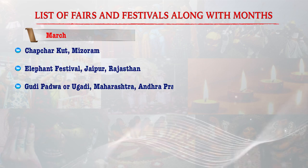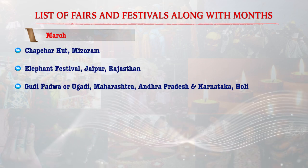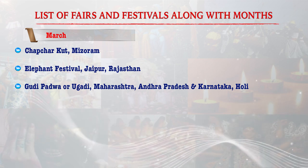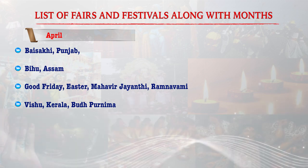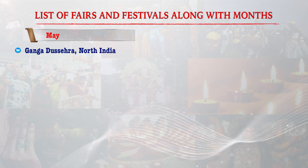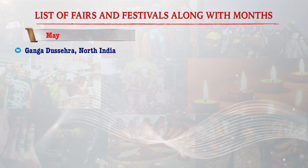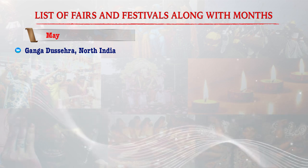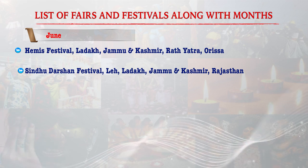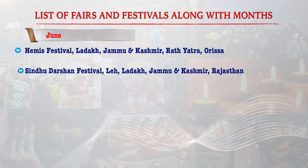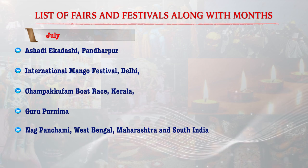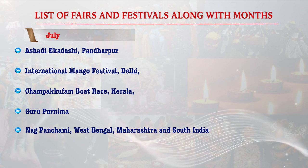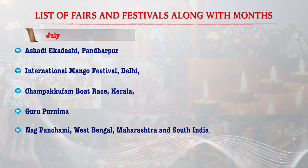In March: Chapchar Kut in Mizoram, Elephant Festival Jaipur Rajasthan, Gudi Padwa in Maharashtra, Andhra Pradesh and Karnataka, and the very important festival of Holi. In April: Baisakhi Festival, Bihu Festival in Assam, Good Friday, Easter Day, Mahavir Jayanti, Vishu Kerala, and Buddha Purnima. In May: Ganga Deshara in North India. In June: MS Festival Ladakh, Rath Yatra in Odisha, Sindhu Darshan Festival at Leh Ladakh. In July: Ekadashi, International Mango Festival in Delhi, Boat Race Kerala, Guru Purnima, and Nag Panchami in West Bengal, Maharashtra and South India.